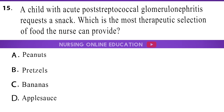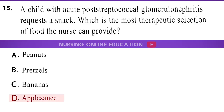Question 15: A child with acute post-streptococcal glomerulonephritis requests a snack. Which is the most therapeutic selection of food the nurse can provide? A. Peanuts. B. Pretzels. C. Bananas. D. Applesauce. The answer is option D: Applesauce.